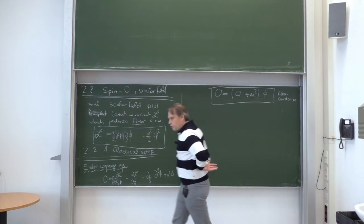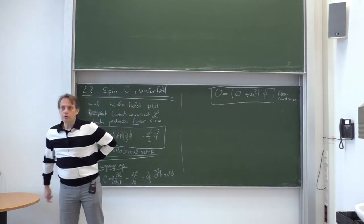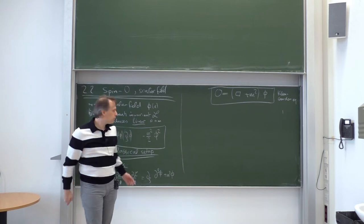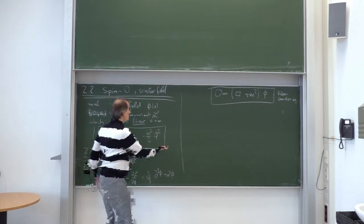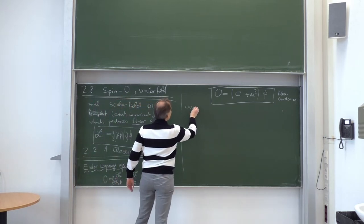This equation is often discussed in relativistic quantum mechanics contexts where the Klein-Gordon equation is interpreted as a quantum mechanical wave equation. But here it is not a wave equation for quantum theory — here it is the classical field theory Lagrange equation coming from this Lagrangian. This is a purely classical theory at the moment, and phi is a classical field satisfying the Klein-Gordon equation.